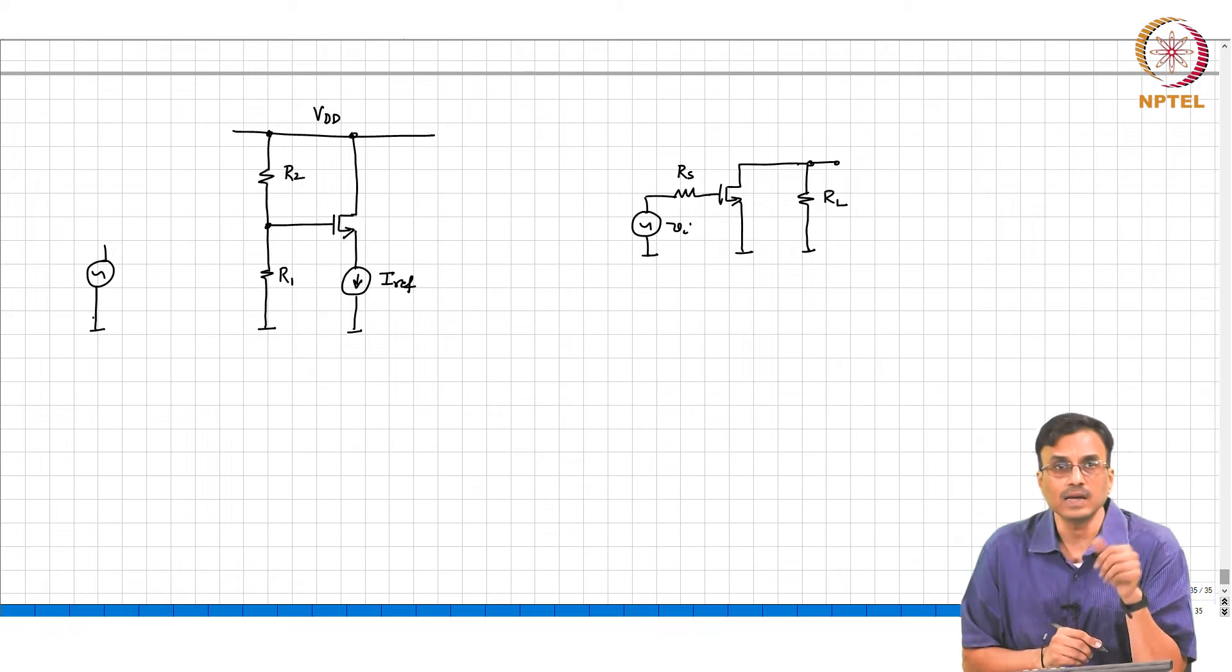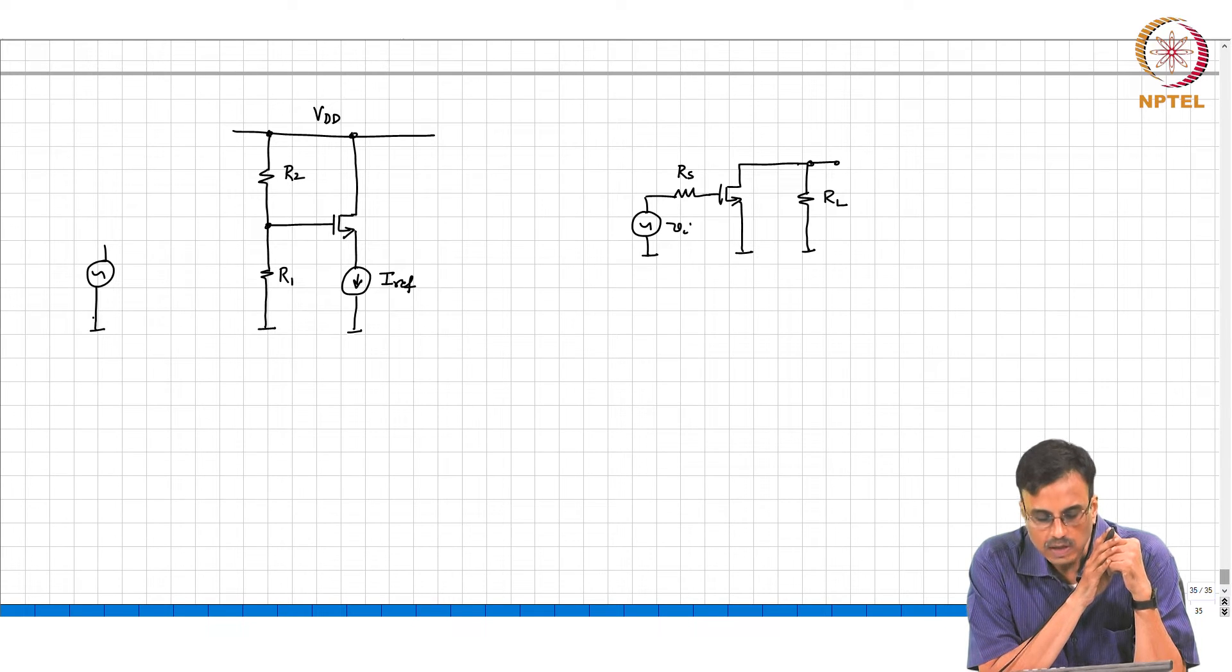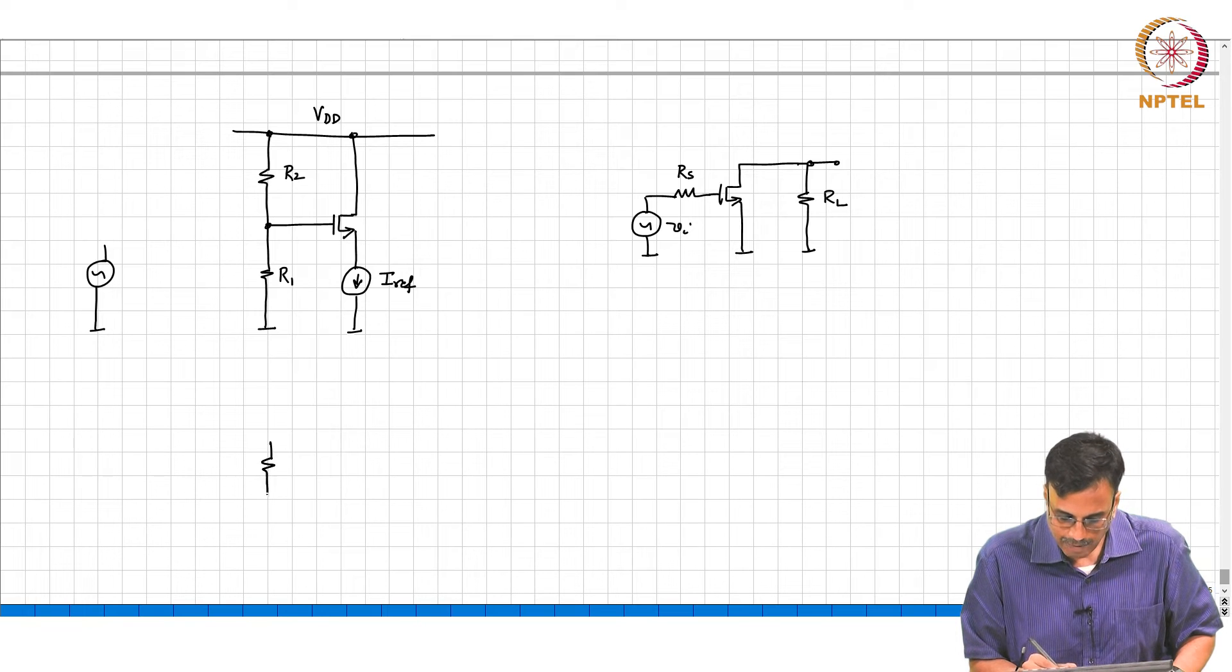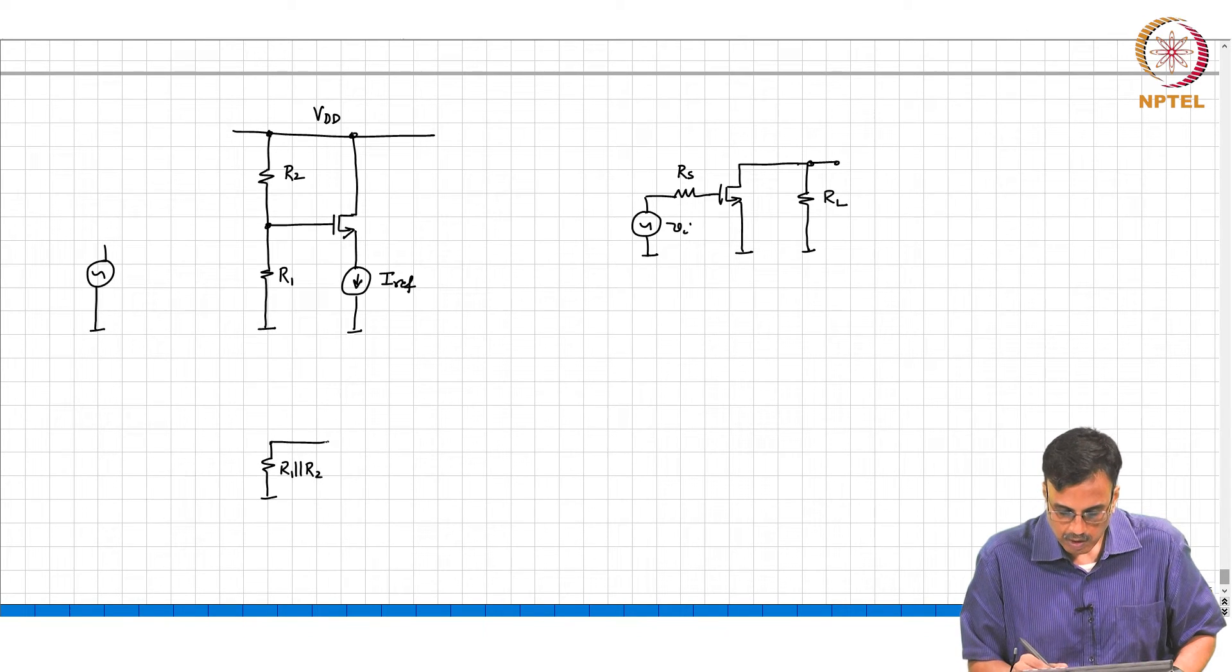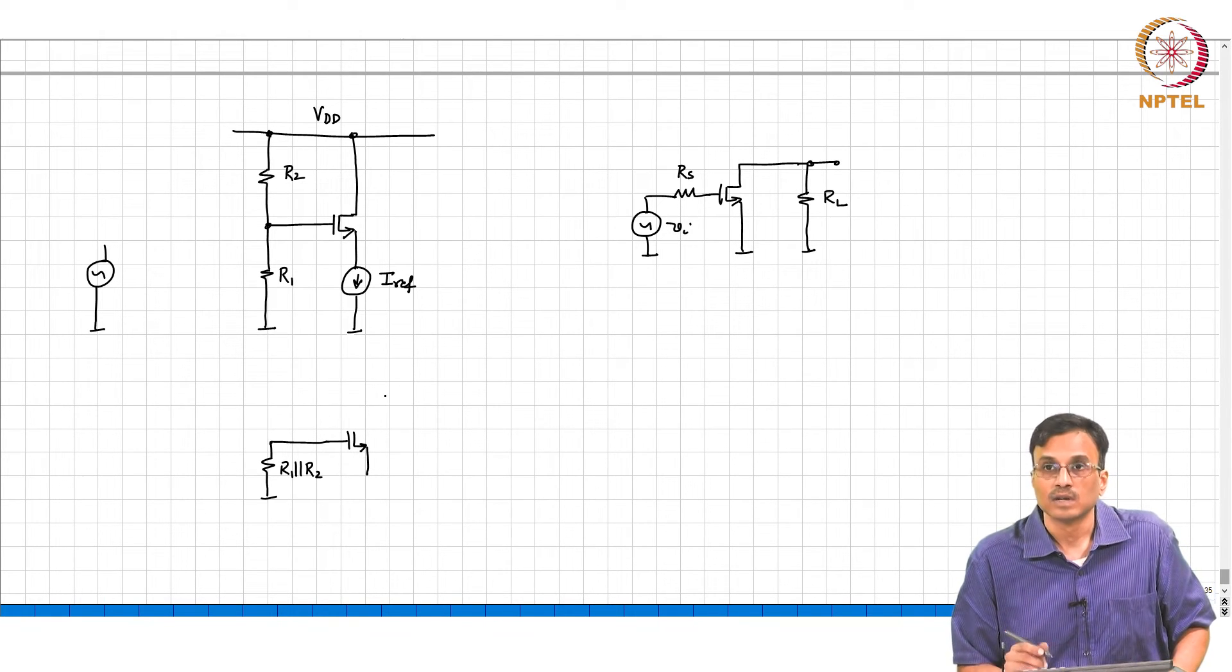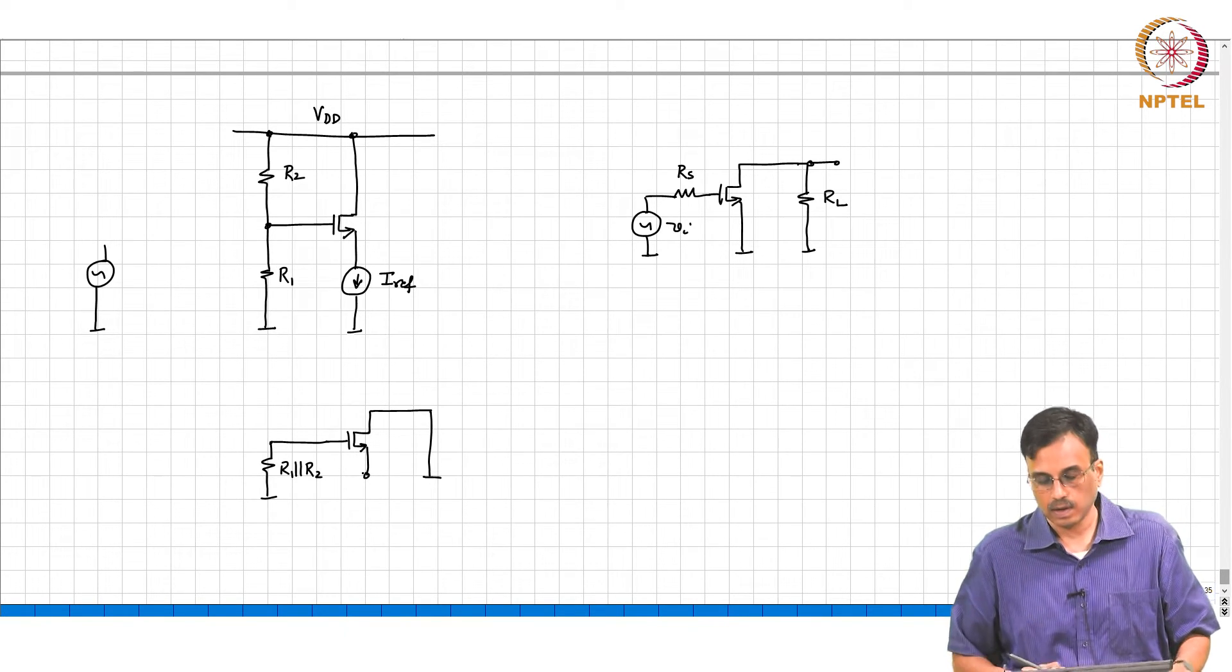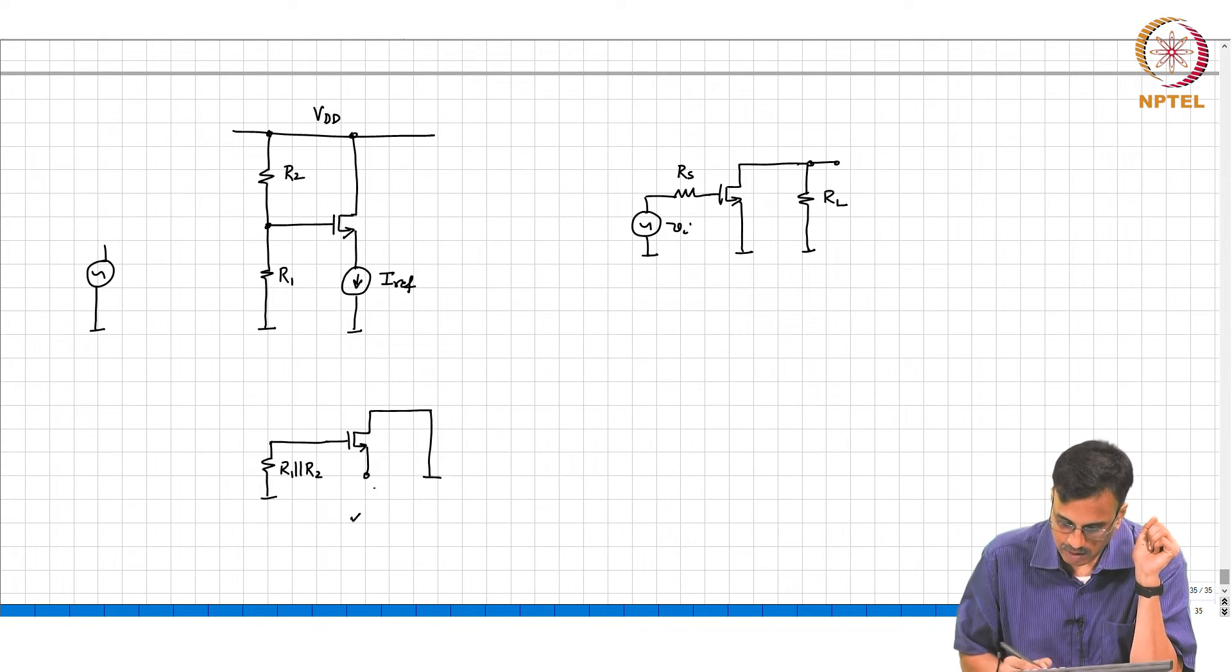Basically what you need to do is mentally draw the small signal equivalent of the network on the left. If you do that, what happens to VDD? Ground. And what happens to the current source? What happens to R1 and R2? Very good, R1 parallel R2 and the transistor is here. What happens to the source? The source as it stands is an open circuit. And what happens to the drain? Ground to ground. So this is an open circuit. We want to make it look like that.